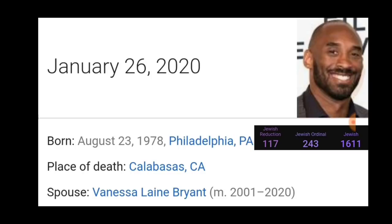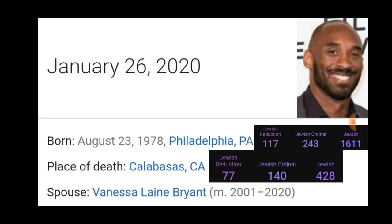He died in the helicopter crash in Calabasas, California. The full spelling of Calabasas California in Jewish reduction is 77. Jewish ordinal is 14, which is 7 plus 7. And the reason I'm mentioning Jewish gematria is because it relates to the Jewish messiah that's coming - which I believe is Stinky Bo, the fake messiah. The regular Jewish value is 41, and he died at 41. 41 backwards is 14, which is 7 plus 7 again. So we have all these 77s.